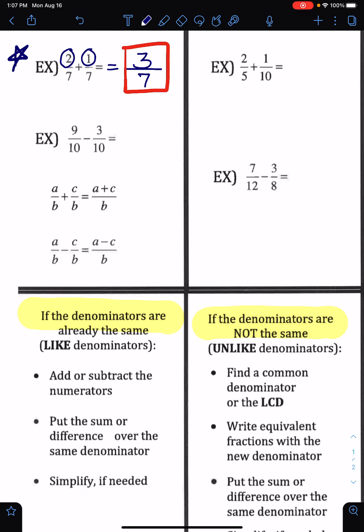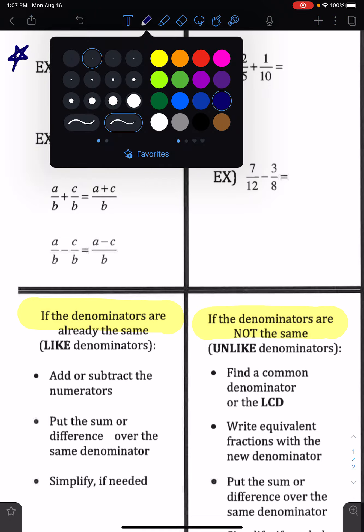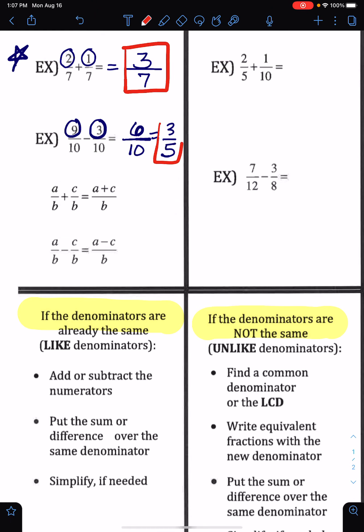For the next one, we have again like denominators, so we're going to keep the denominator the same. Just like addition, we're going to subtract the numerators and keep the denominator the same. So 9 minus 3 is 6. In this case, the fraction 6/10 can be simplified. We can divide the 6 and the 10 both by 2 to get 3/5. So 3/5 is the correct answer—it's the fraction in its simplest form.